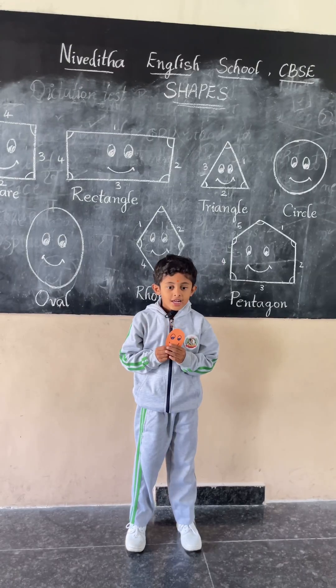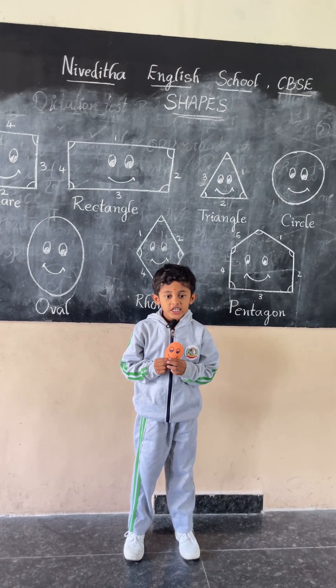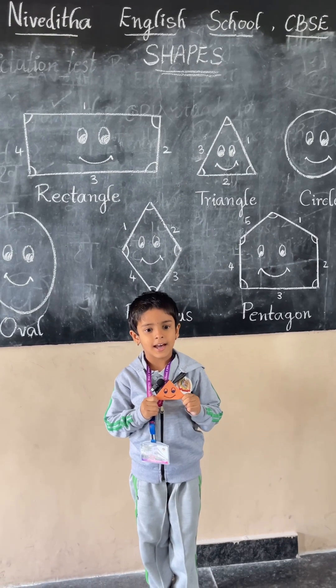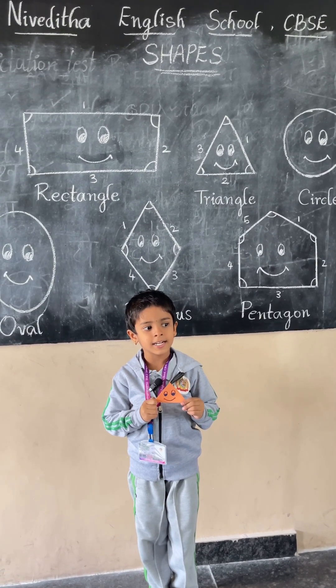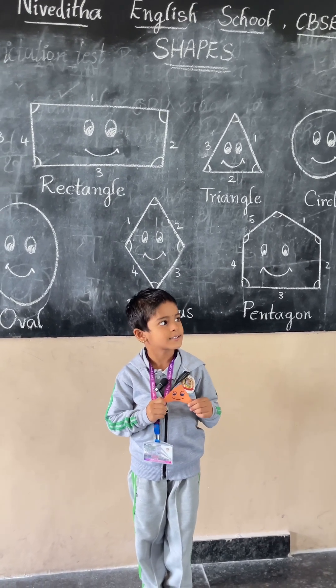The oval has zero sides and zero corners. A triangle — it has three sides and three corners.